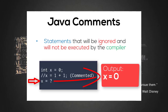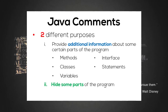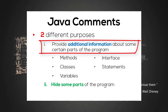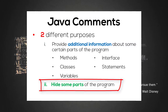Java comments are usually used for two different purposes. We use comments to provide additional information or explanation about certain parts of your program, such as methods, classes, variables, interfaces, and any other relevant statements. By doing so, it will help the person reading the code — including yourself — to better understand the functionality of the program. Other than that, we can use comments to hide some parts of the program, which is extremely useful if you would like to hide certain features from the user.